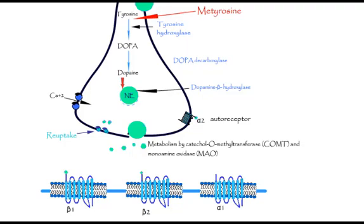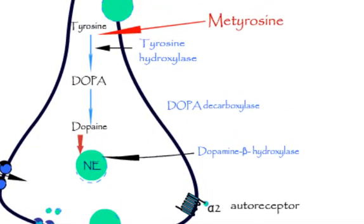The rate limiting step, conversion of tyrosine to DOPA, can be inhibited by metyrosine. Metyrosine has been used in the treatment of pheochromocytoma.